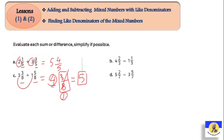Next, letter B: 4 and 2/3 minus 1 and 1/3. First we agreed: here we have subtraction. We start with the fraction first: 2/3 minus 1/3 = 1/3. Then 4 minus 1 = 3. So the answer is 3 and 1/3.